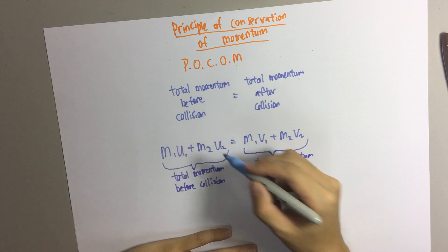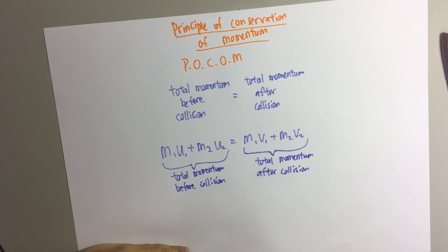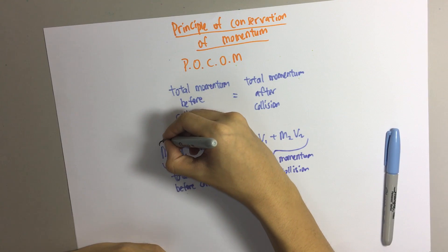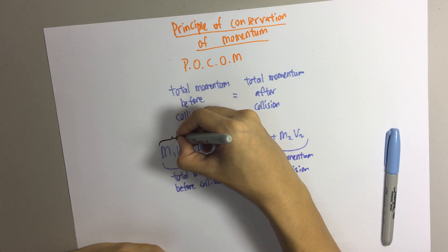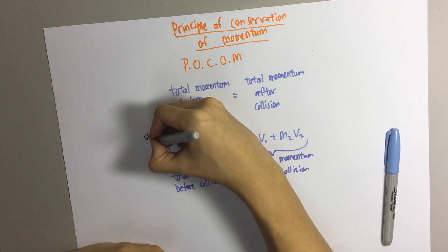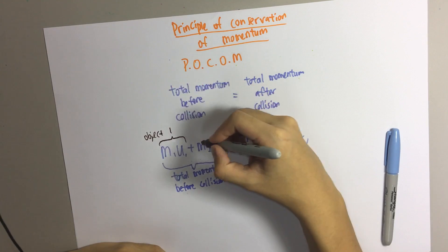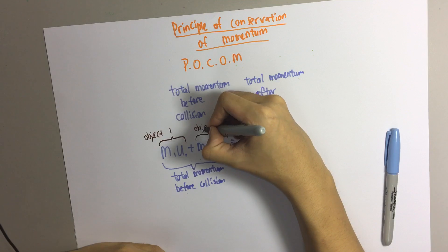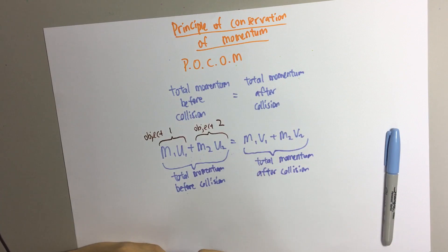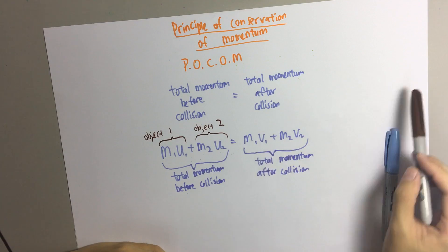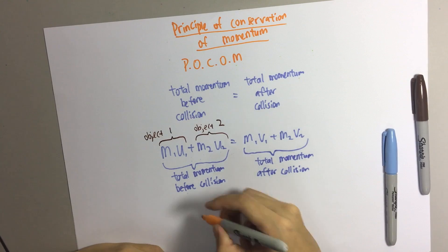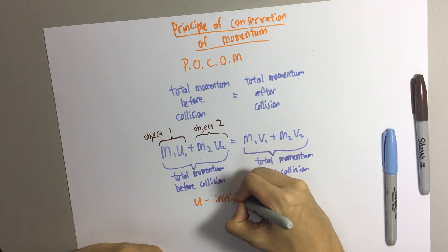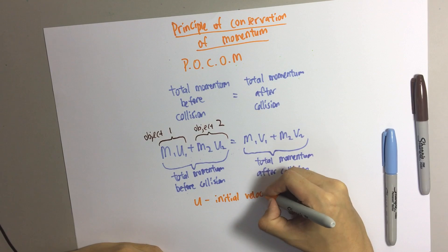So why do we have 1 and 2? 1 means it is the first object — object number 1. And 2 means object number 2. Then you see u and v — u means the initial velocity of the objects.